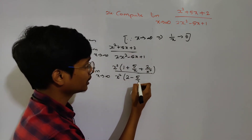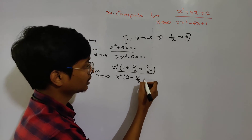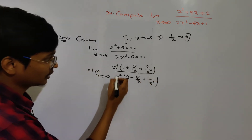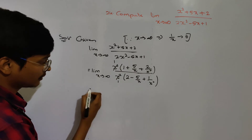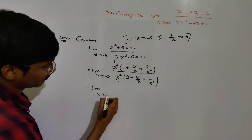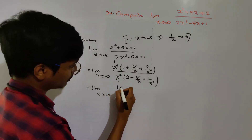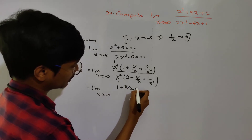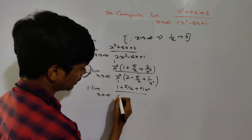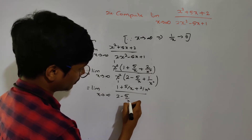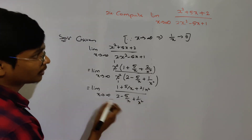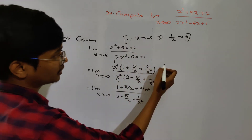The denominator becomes 2 minus 5 by x plus 1 by x squared. So the expression is now: 1 plus 5 by x plus 2 by x squared, divided by 2 minus 5 by x plus 1 by x squared.